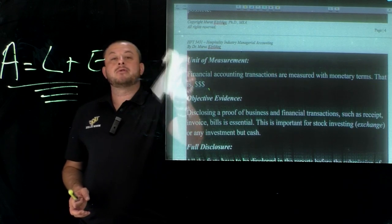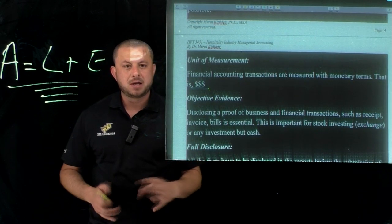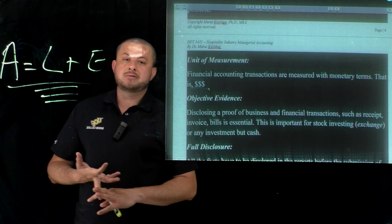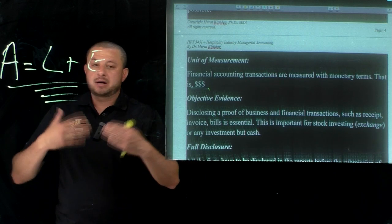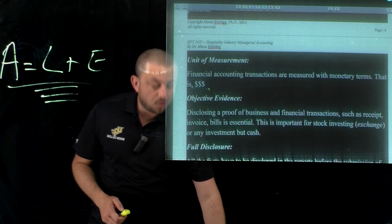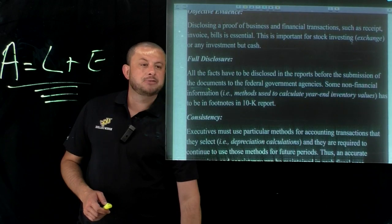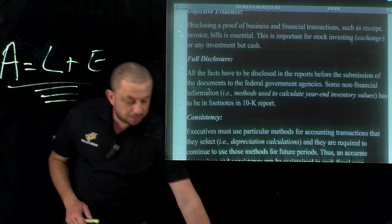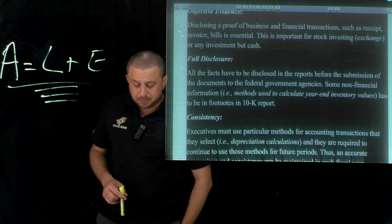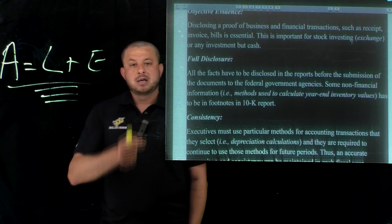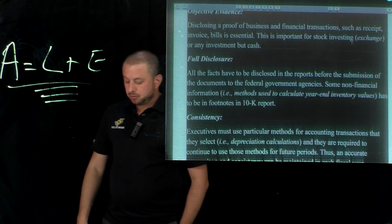Objective evidence: you must be objective and disclose everything the company does — from community activities to charity activities to social responsibility events, to accounting procedures. It must all be disclosed with evidence. Full disclosure is important as a GAAP principle: companies must disclose everything in their full disclosure reports in a logical way.